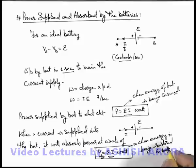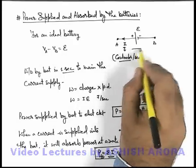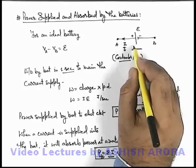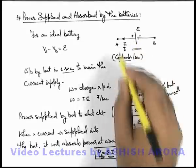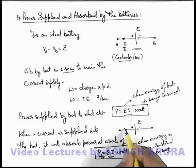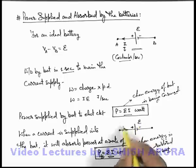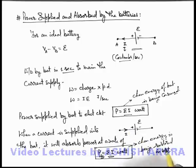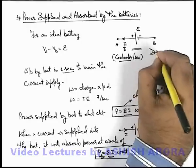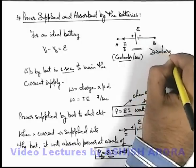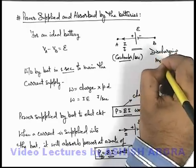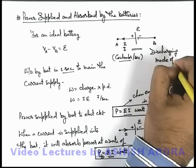In the case of accumulators, the first mode — where the battery supplies current — is the discharging mode. The second mode — where current is supplied into the battery — is the charging mode. When a battery is connected across a charger, this is how the chemical energy is recharged or restored. So the first is called the discharging mode of battery.